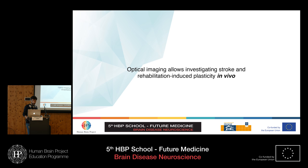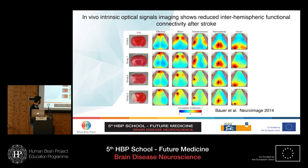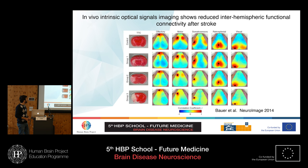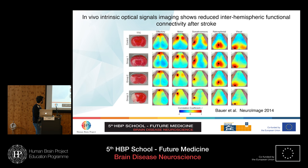Now I will present two elegant experiments. The first is from Bauer and collaborators in 2014. They used intrinsic optical signals (IOS), which are signals provided by the different light absorption between oxygenated and deoxygenated hemoglobin — essentially a form of BOLD fMRI. They performed in vivo intrinsic optical signal imaging, showing reduced inter-hemispheric functional connectivity. The first column shows coronal brain slices of animals in four experimental groups.